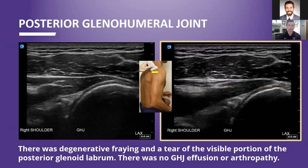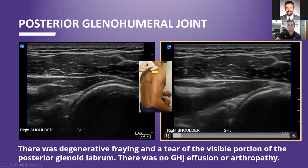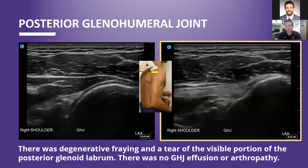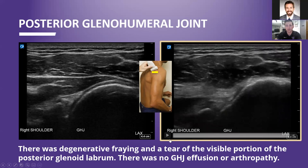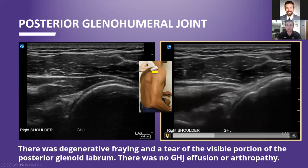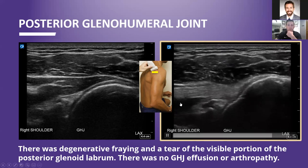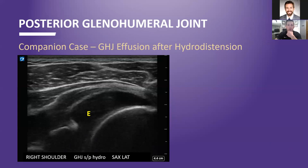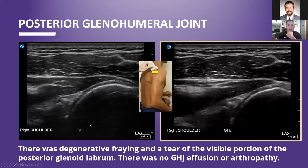Focusing on the posterior glenohumeral joint: there was some degenerative fraying of the labrum and there was a tear at the posterior aspect. There wasn't any glenohumeral joint effusion or arthropathy, and this patient was relatively young, so that made sense. You can see the labrum move a little bit more than you'll see on normal labrums when this patient goes into external rotation. Just to give an example of an effusion — this is a different case after hydrodistension — it helps show where you're going to see a glenohumeral joint effusion and confirms the lack of any effusion here.